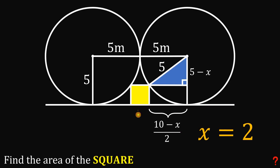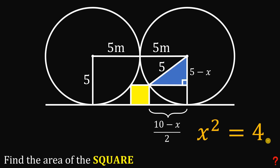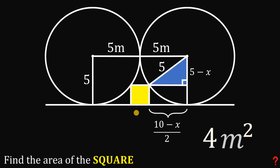With x = 2, the side length of the square is 2 meters. We can verify: the hypotenuse is 5, the leg (5 − 2) = 3, and the other leg (10 − 2)/2 = 4, giving us a 3-4-5 right triangle — confirming x = 2. The area of the square is x² = 2² = 4, so the area of the yellow square is 4 square meters.